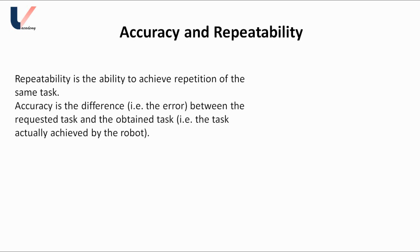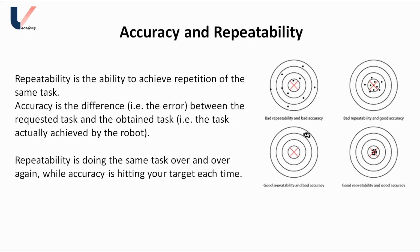Look at this figure. In figure 1, repeatability is bad as well as accuracy is bad, because the results are very scattered — they are very far from each other, meaning repeatability is bad, and they are also far from the center point which is our target, so accuracy is also bad. In figure 2, accuracy is good because all the results are in close proximity to our target, but they are very far from each other, so repeatability is again bad.